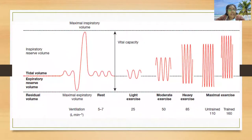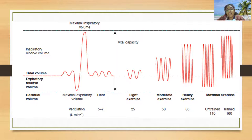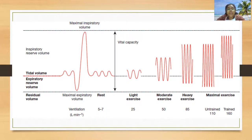A spirometry pattern is shown for normal breathing at rest, followed by during light exercises where the tidal volume remains the same. In moderate exercise, there is an increasing respiratory frequency. Comparing an untrained and a trained person during maximal exercises: an untrained person will require more expiratory reserve volume with increased breathing frequencies, while a trained athlete will conserve the expiratory reserve volume with an increase in respiratory rate.